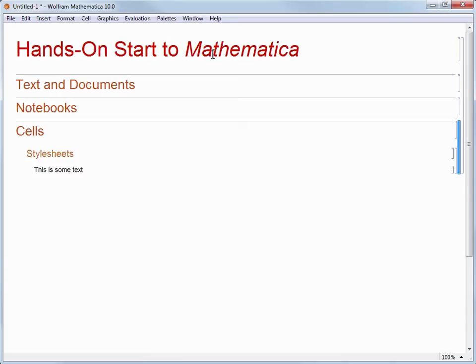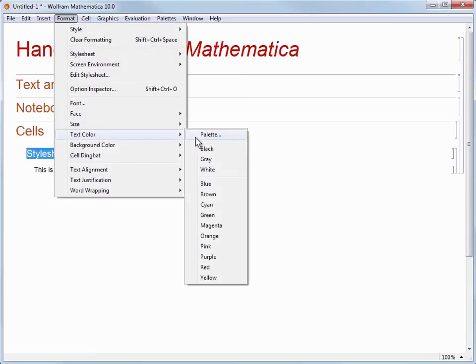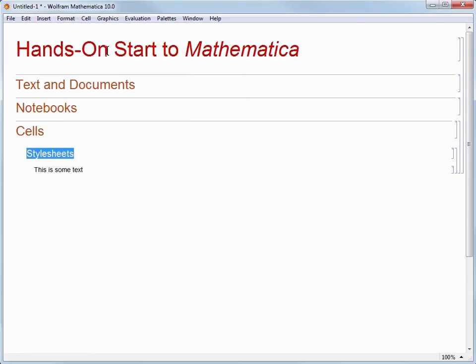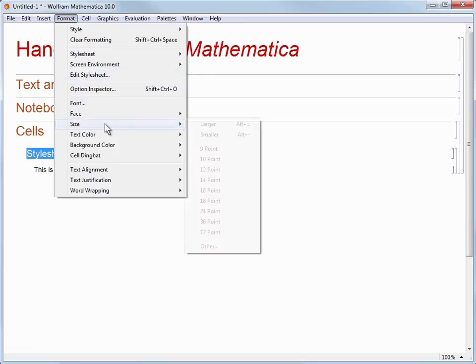Besides the style choices provided by the stylesheets, we can also customize any particular piece of text that we would like using the same sort of formatting tools you are already familiar with. For example, let's select the text for style sheets, and then choose Format, Text Color, and then Blue, and then Format, Size, and 36 to make it much larger.